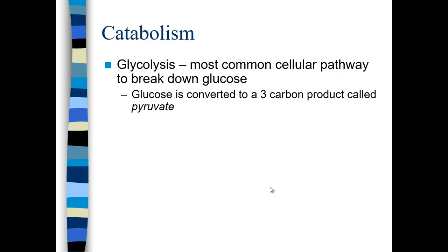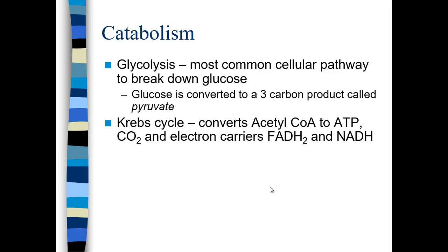After glycolysis, you have what's called the Krebs cycle, also called the tricarboxylic acid pathway or TCA pathway. This converts a substrate called acetyl-CoA to ATP, carbon dioxide, and electron carriers FADH2 and NADH.